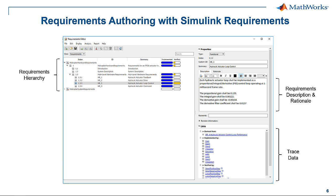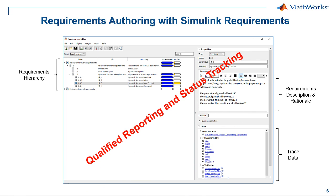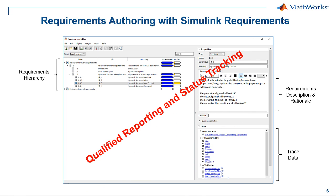Simulink Requirements can be used to author the requirements and link them to the models and test cases. A report can be generated that includes the requirement details, trace data, and implementation and verification statuses. Simulink Requirements can be qualified using the DO qualification kit.